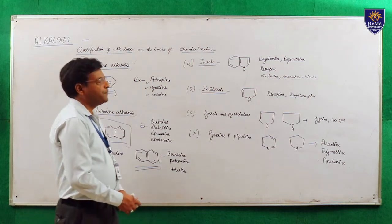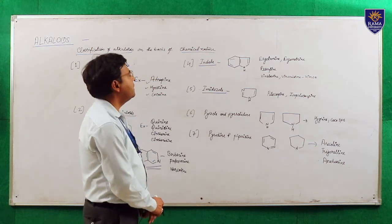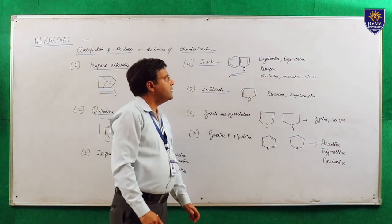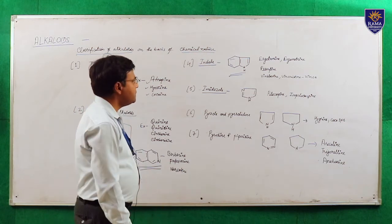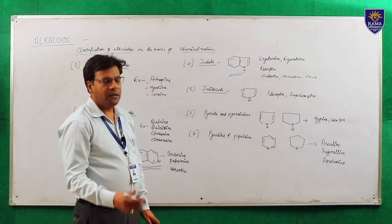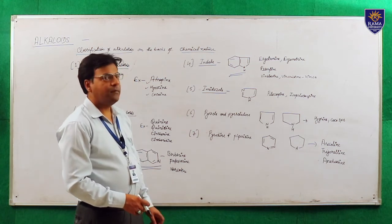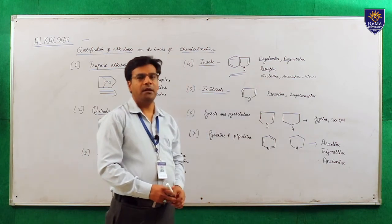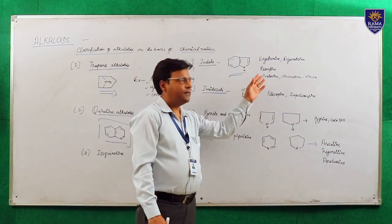Another group is the indole type of alkaloids. The basic moiety is indole, and examples are ergotamine and ergometrine, obtained from ergot, and reserpine, obtained from Rauwolfia serpentina — a very powerful drug used in the treatment of hypertension — and vinblastine and vincristine, obtained from Vinca rosea or Catharanthus roseus, used for the treatment of cancer.